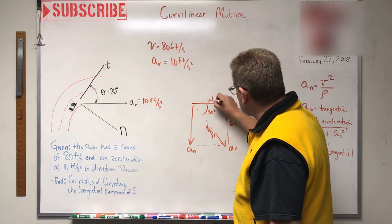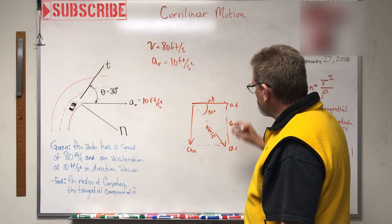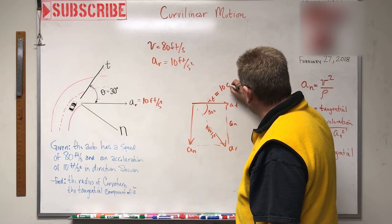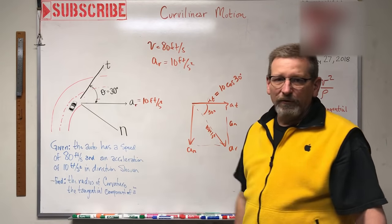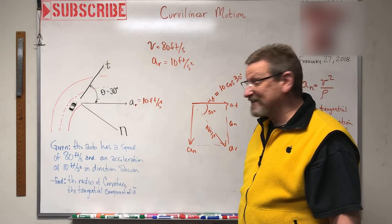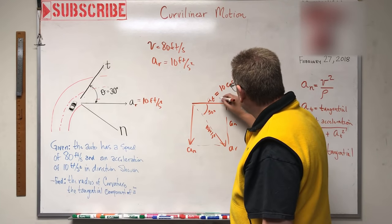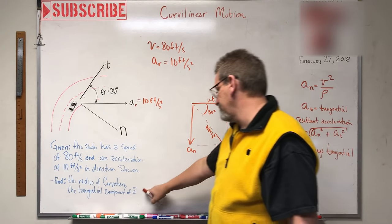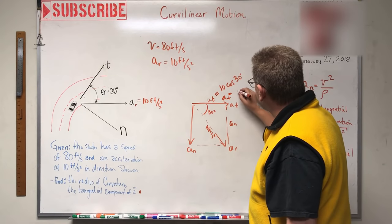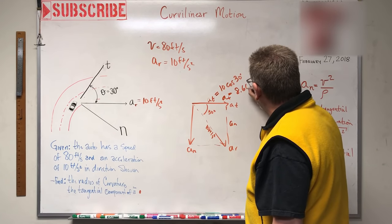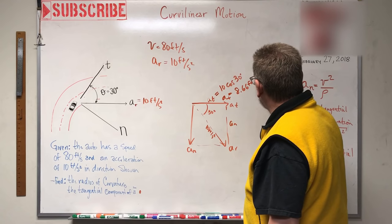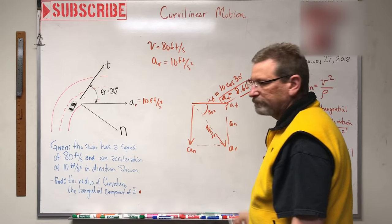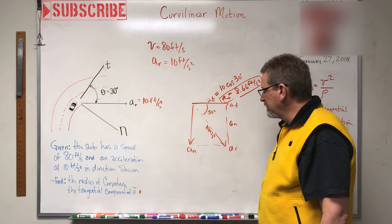Looking at the triangle, aₜ is the adjacent side, so aₜ = 10 × cos(30°) = 10 × 0.866 = 8.66 ft/s². That is the tangential acceleration — the component along the curve. That's one of the answers we're looking for, and it's pretty straightforward.